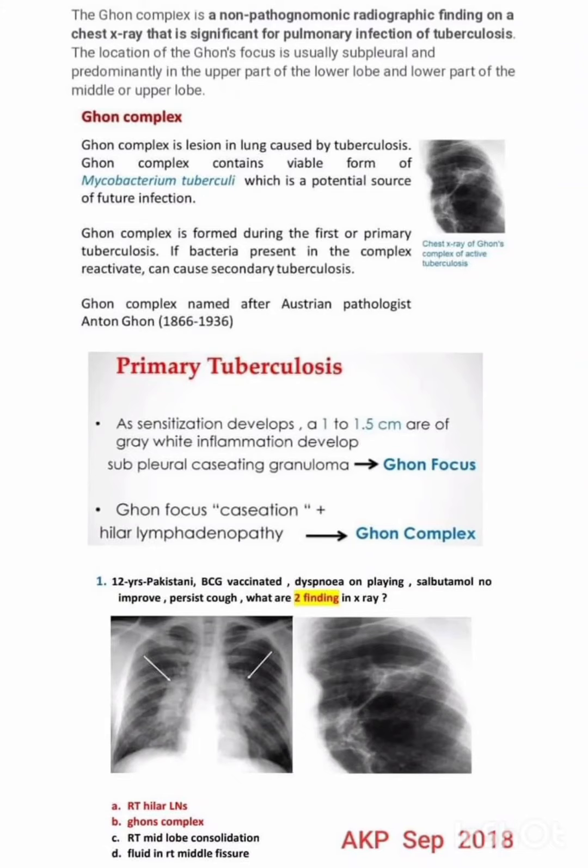Assalamu alaikum dear doctors. In this video I am discussing about the Ghon complex. The Ghon complex is a non-pathognomonic radiographic finding on a chest x-ray that is significant for pulmonary infection of tuberculosis. The location of the Ghon focus is usually subpleural and predominantly in the upper part of the lower lobe and lower part of the middle or upper lobe.